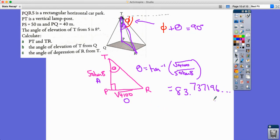As I said, these two angles are going to add up to 90, so all I have to do now is 90 subtract the answer on my calculator—90 subtract answer—and I get an answer of 6.26 degrees. And that is my angle of depression of R from T.